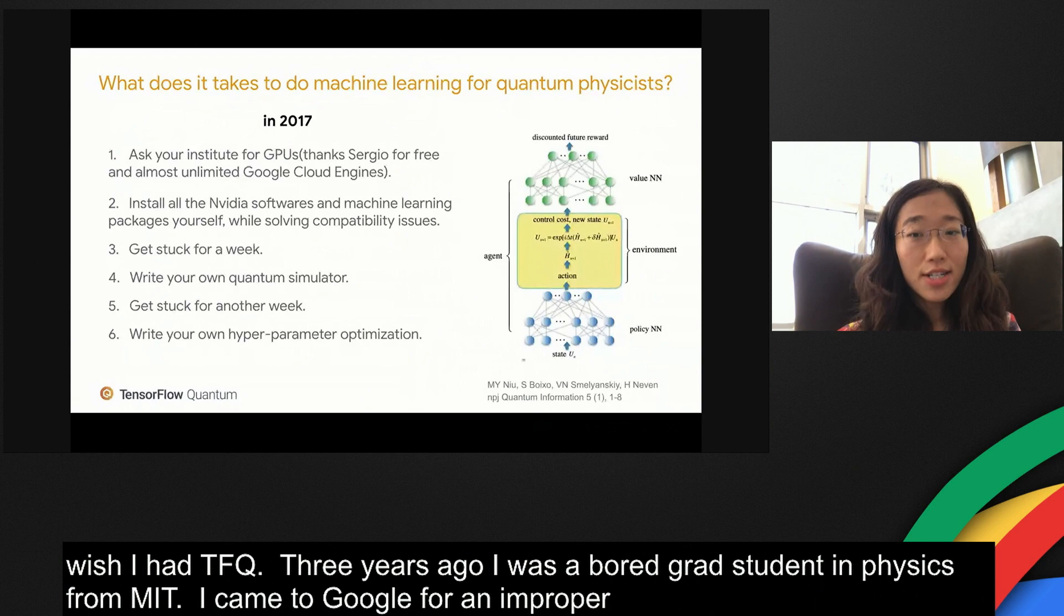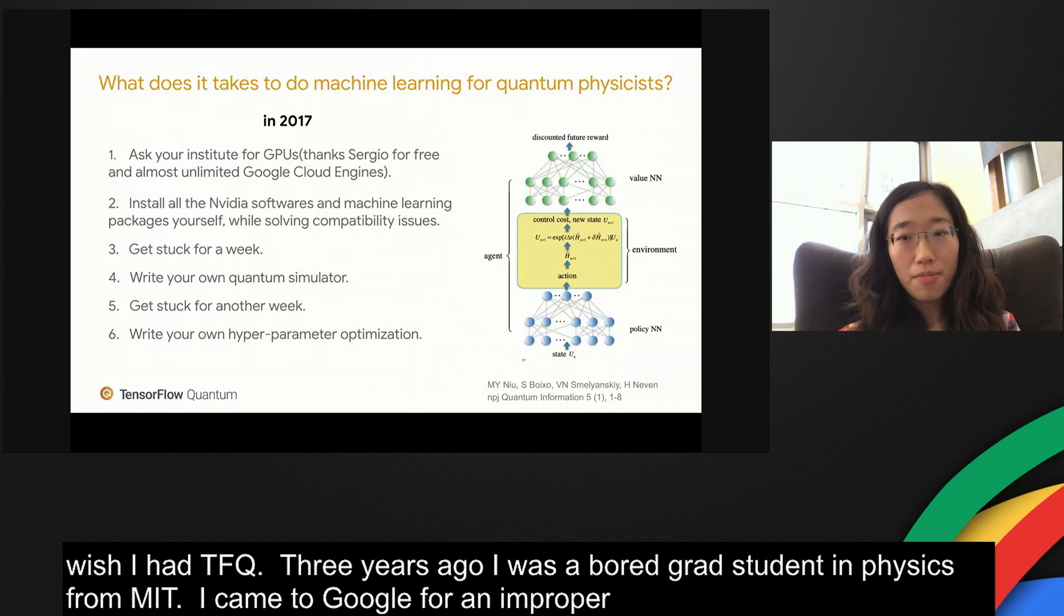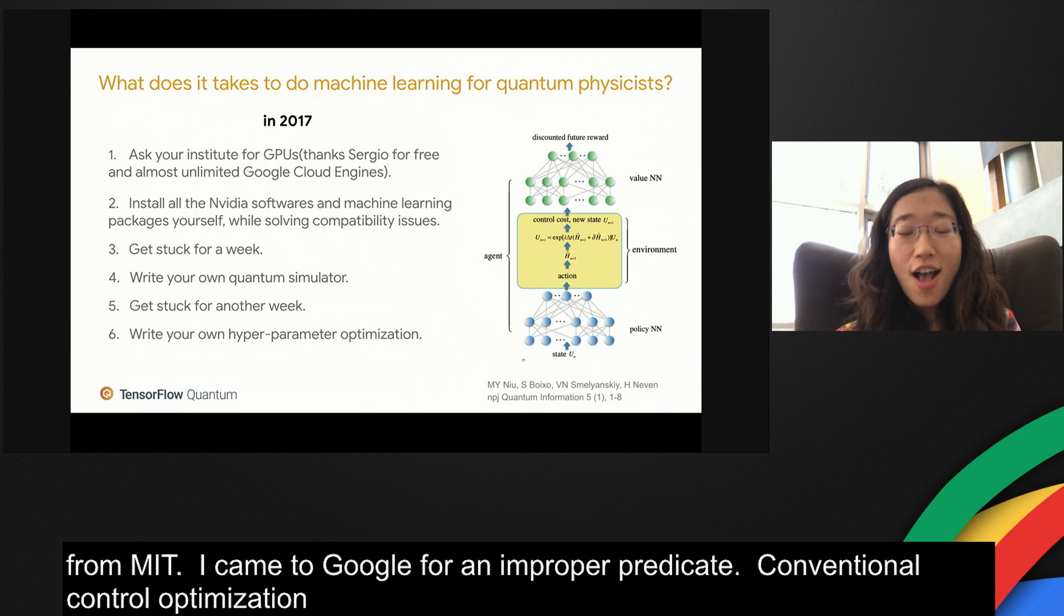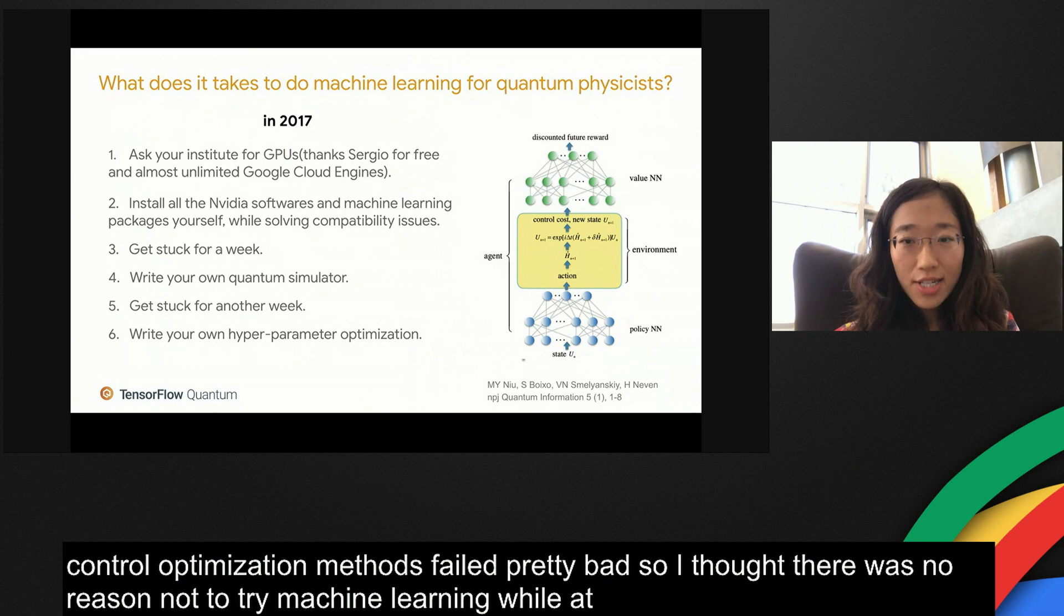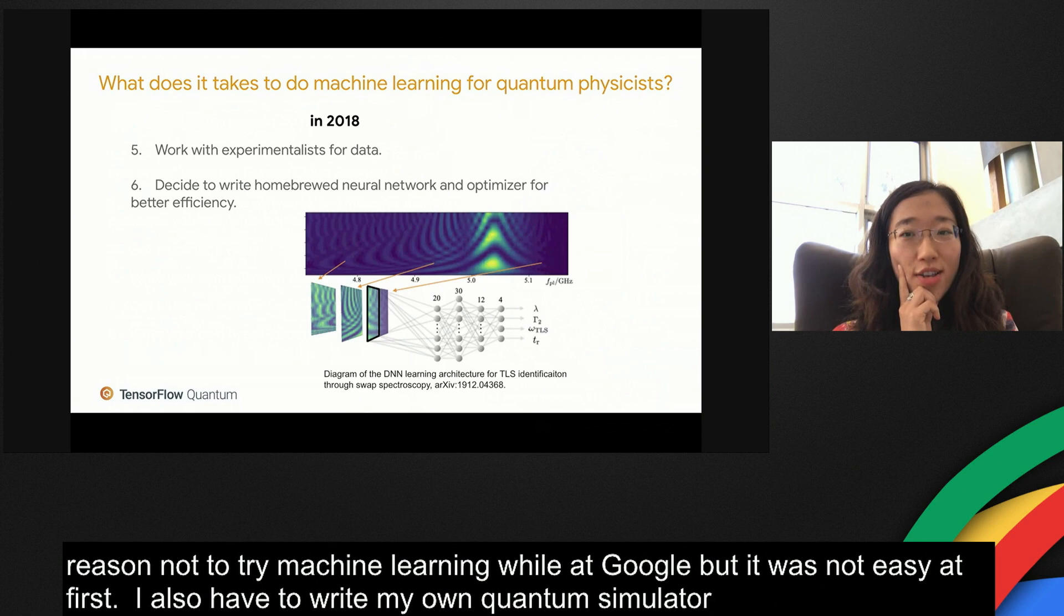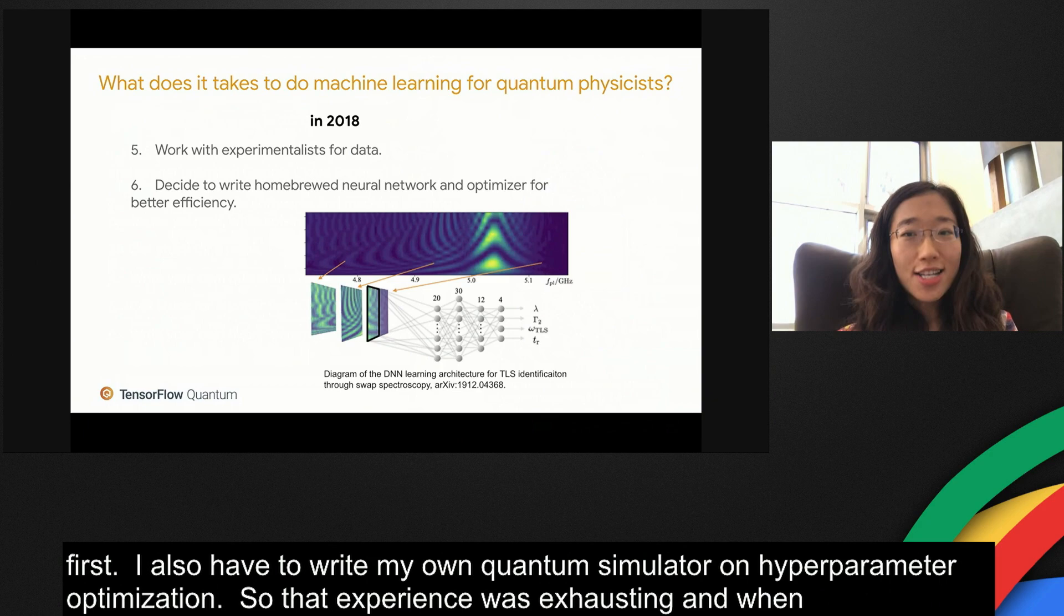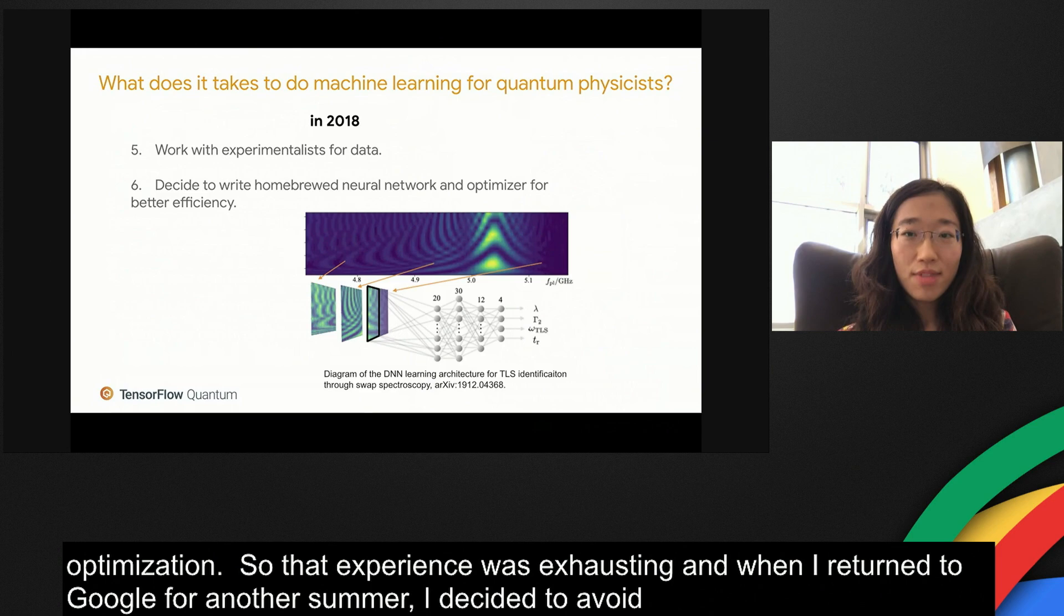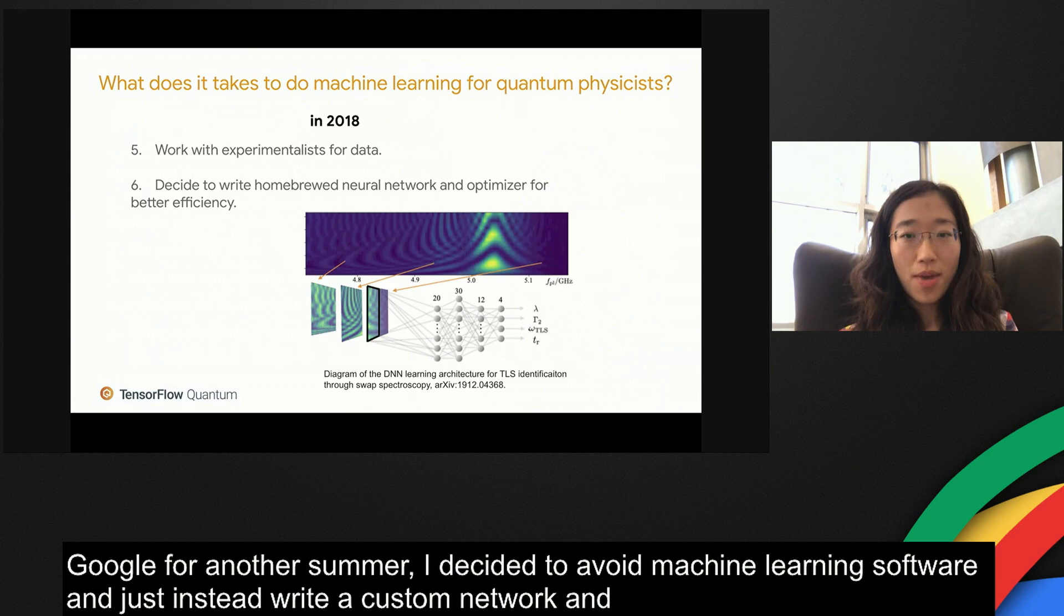Conventional control optimization methods failed pretty bad. I saw there's no reason not to try machine learning well at Google, but it wasn't easy at first. After struggling with various incompatibility issues and getting stuck for an inevitable time, I also had to write my own quantum simulator and hyperparameter optimization. That experience was exhausting, and when I returned to Google for another summer, I decided to avoid machine learning software and just write a custom network and optimizer with common tensor algebra of Python for my next project.